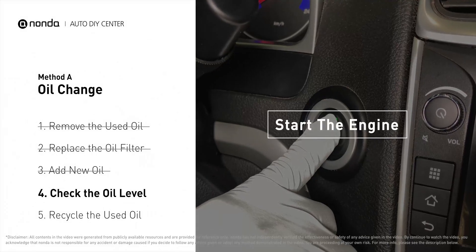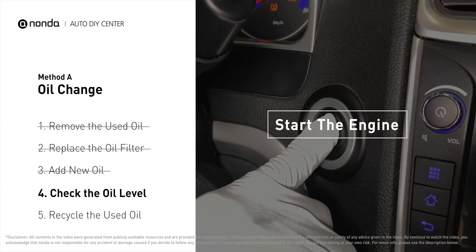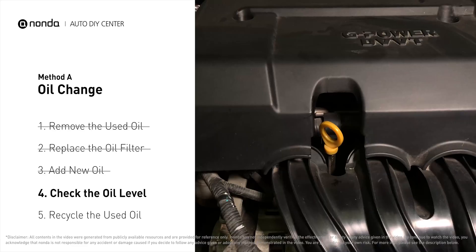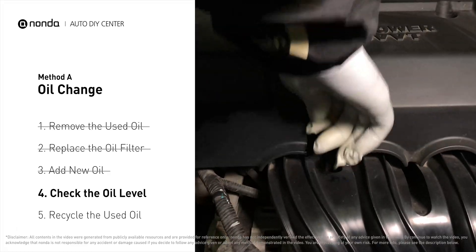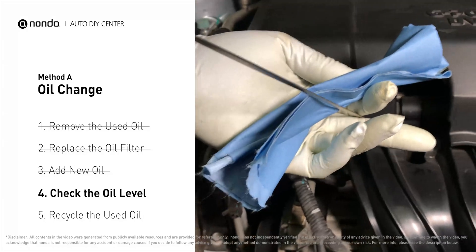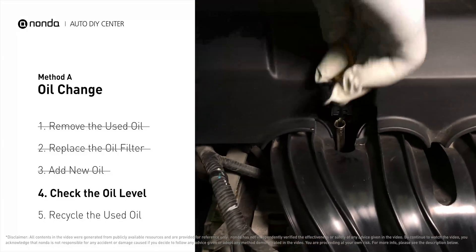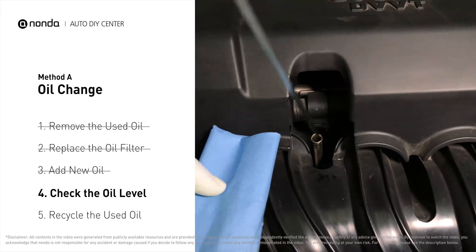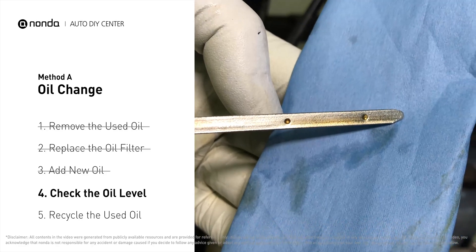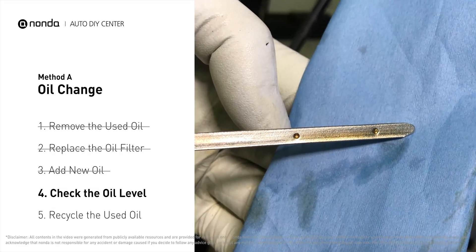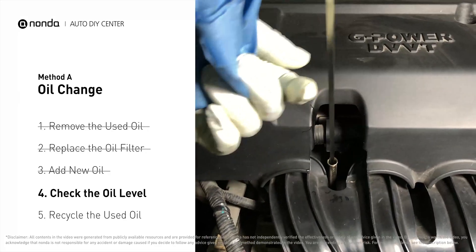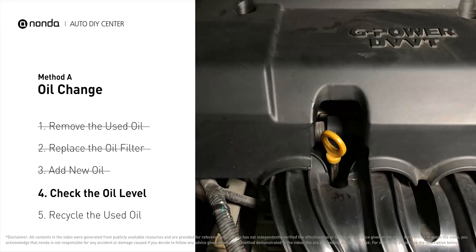After the oil change, start the engine and let it run for a minute to bring your oil pressure up, then recheck your oil level. To check oil levels, pull the dipstick out and clean it off, replace the dipstick, and pull it out again. The oil should be near the top dot or fill line. If it is close to the lower dot, you'll need to add more oil. If your oil levels are good, replace the dipstick and shut the hood.